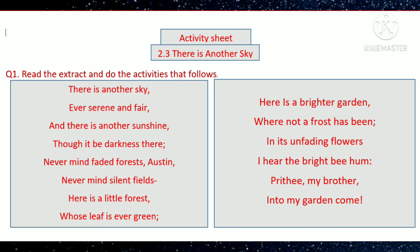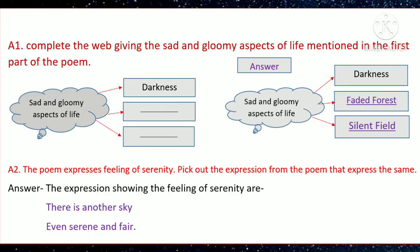Question A1: Complete the web giving the sad and gloomy aspects of life mentioned in the first part of the poem. The first aspect is 'darkness,' the second aspect is 'dead forest' meaning a gloomy jungle, and the third aspect is 'silent field' meaning a quiet and deserted place.